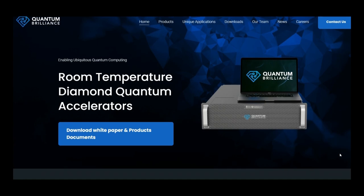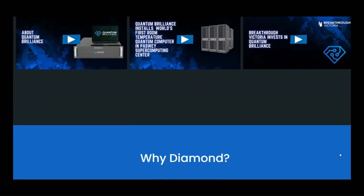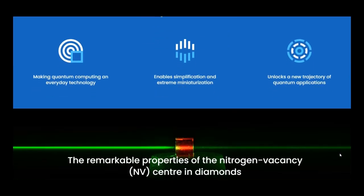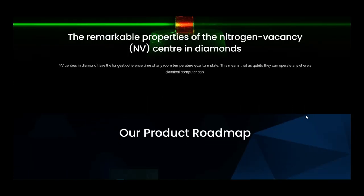Next, Quantum Brilliance, a Dutch startup developing room temperature quantum computers based on NV Center qubits in diamond nanowires. Their large-scale interconnected quantum accelerators hold the capability of addressing complex systems such as molecular dynamics.